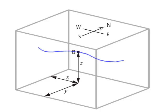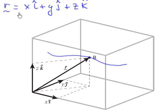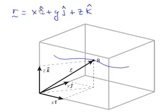In mechanics we like to write the position of our particle — in this case our bumblebee — with a vector, and we're going to call that position vector r. If we write r into its components, it's a distance x in the i-hat direction, a distance y in the j-hat direction, and a distance z in the k-hat direction.